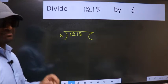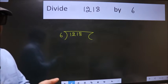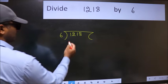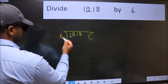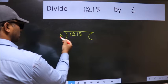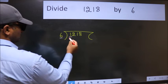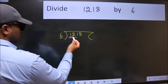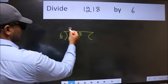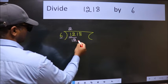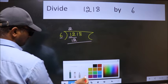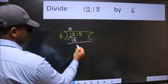Next, here we have 1 and here 6. 1 is smaller than 6. So we should take 2 numbers, 12. When do we get 12 in 6 table? 6 twos, 12. Now we should subtract. We get 0.